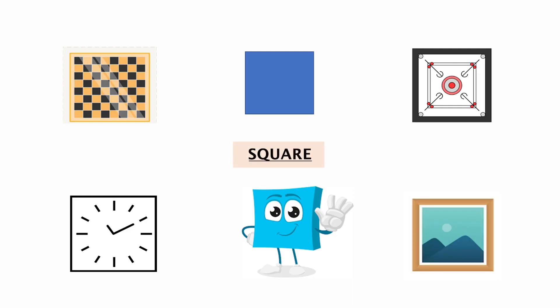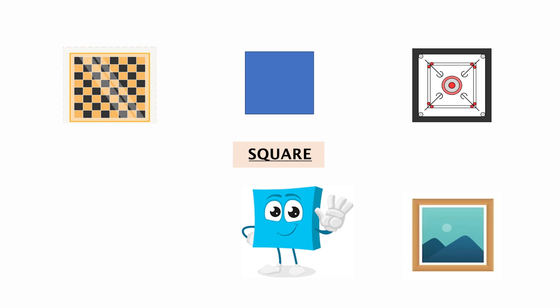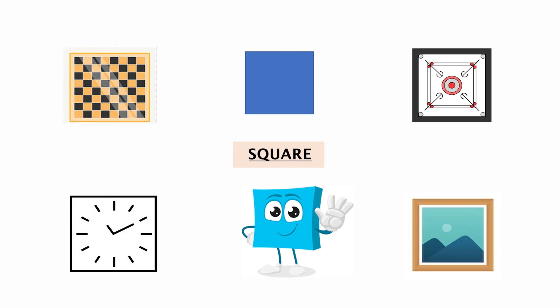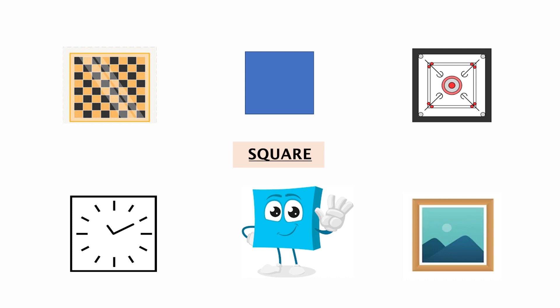Now, what is the shape with four equal sides called? Four equal sides — it's called a square! Several square-shaped objects are visible: a chess board, a wall clock, a carom board, and a wall painting. The common thing in all these objects is the square shape and four equal sides in them.